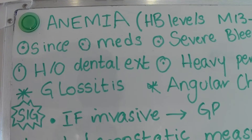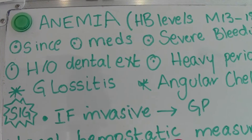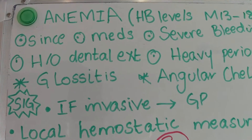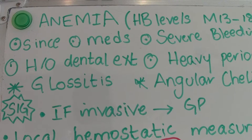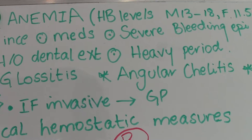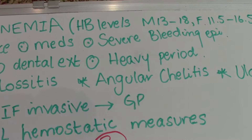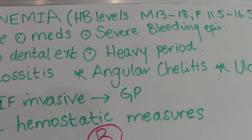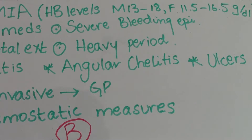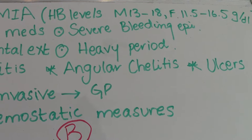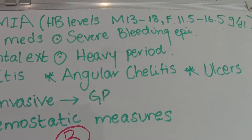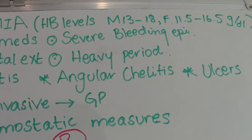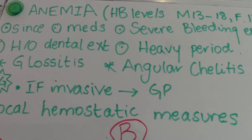Continuing to the second part of the video, covering anemia and bleeding disorders. Normal hemoglobin levels in males are between 13 and 18 g/dL, so anemia would be less than 13. In females, normal is 11.5 to 16.5 g/dL, so anything less than 11.5 would classify as anemic. These values are in grams per deciliter.